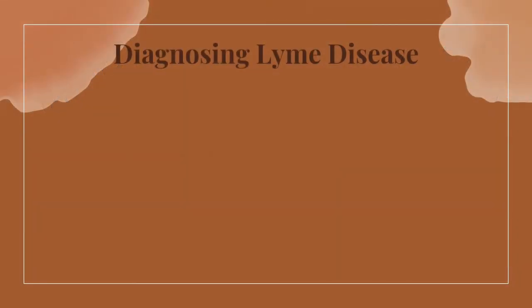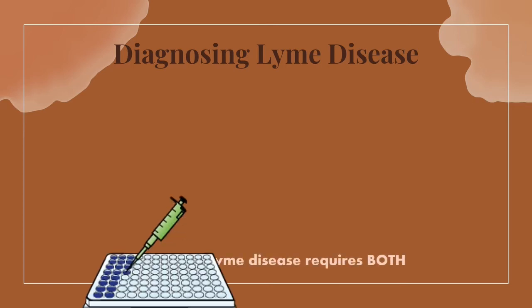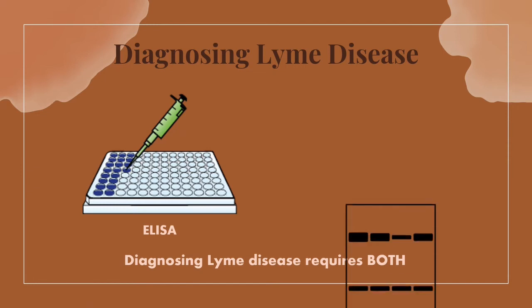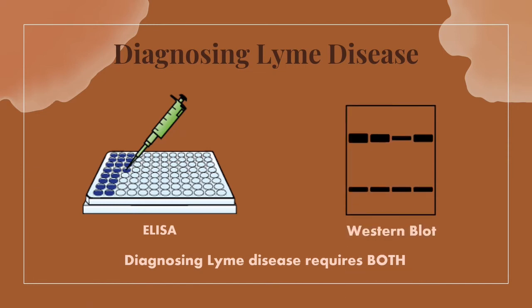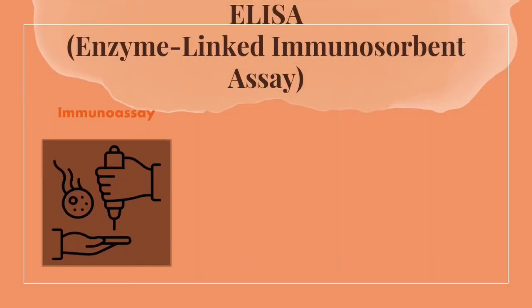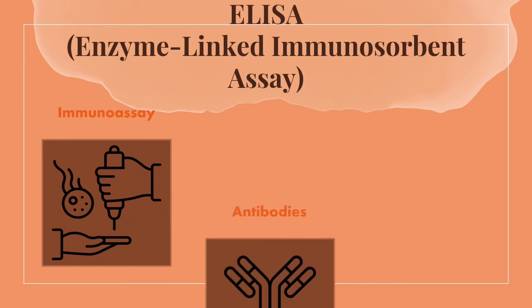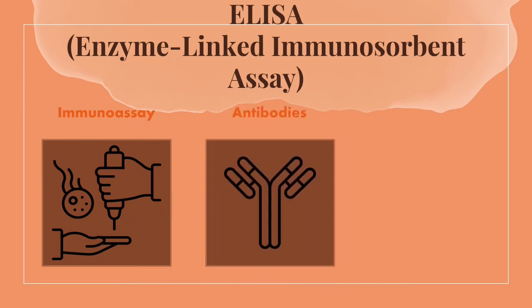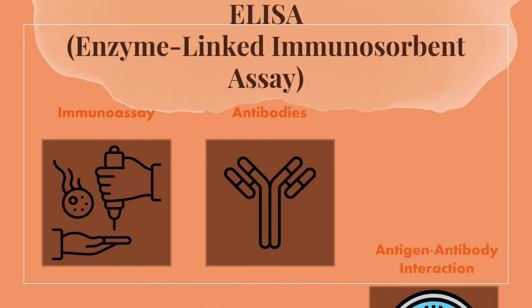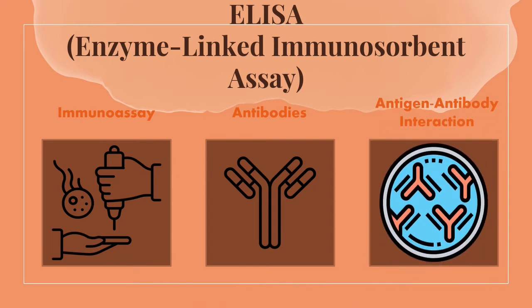Lyme disease is a unique disease compared to the other two because it initially requires an enzyme-linked immunosorbent assay, or ELISA test, followed by the Western blot. Before we dive into why we don't primarily use the Western blot, let's discuss what ELISA does. ELISA is a type of immunoassay, which is essentially a procedure to measure specific proteins through their antibodies or antigens. Antibodies recognize foreign pathogens, such as bacteria or viruses. The main thing we need to know is that we induce an antigen-antibody interaction to determine whether there is a certain protein present.